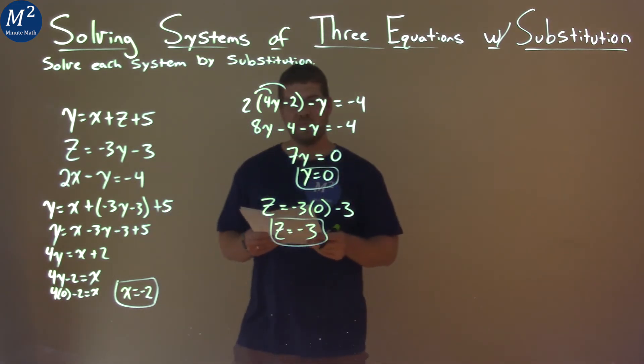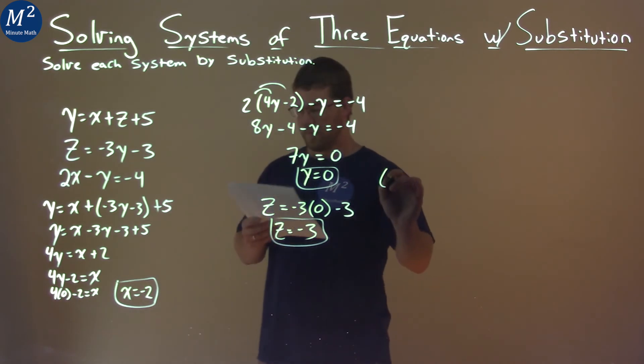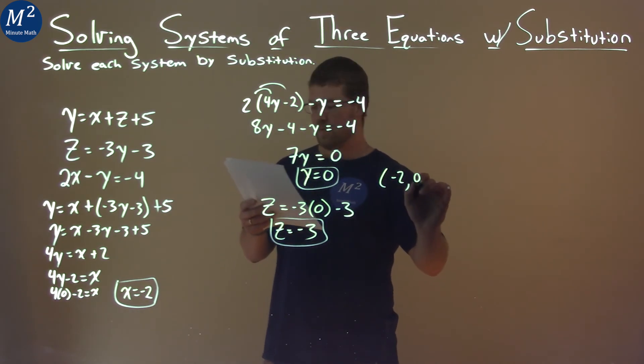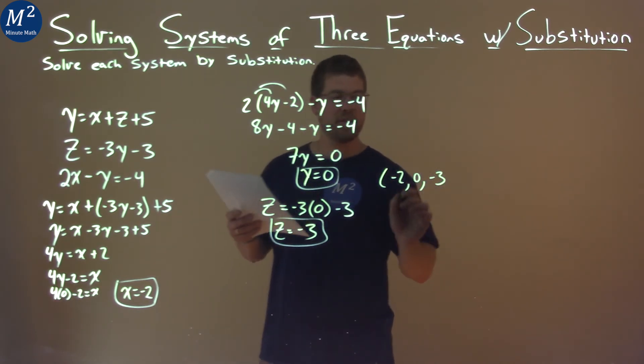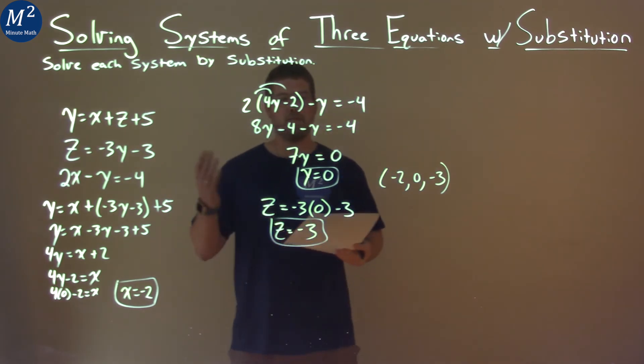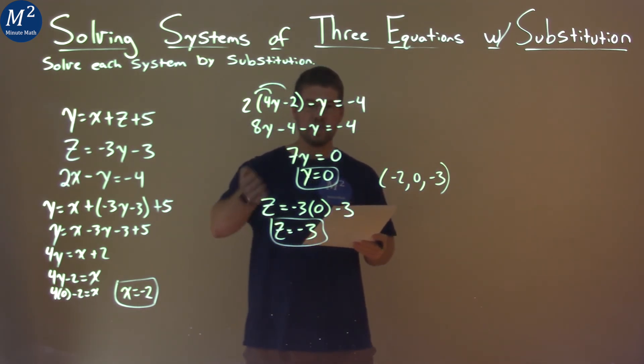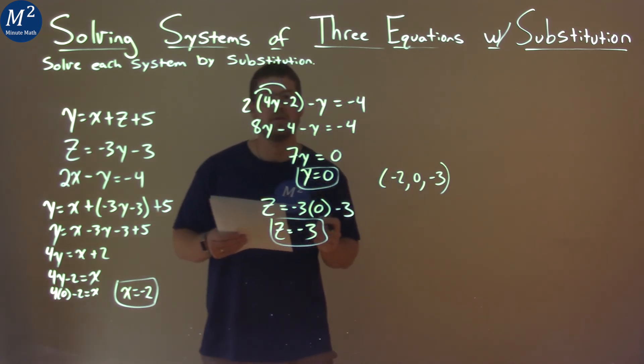And now we have our three answers. We can write it as a coordinate point: negative 2 comma 0 comma negative 3. And there we have our final answer. x is negative 2, y is 0, and z is negative 3.